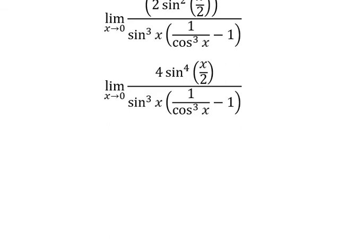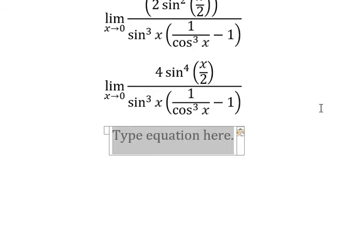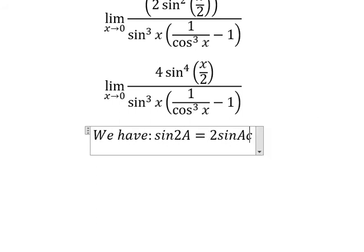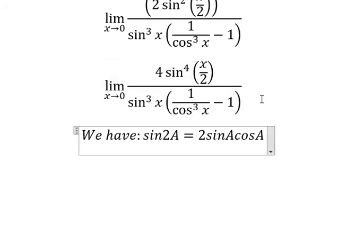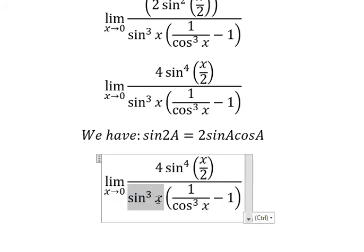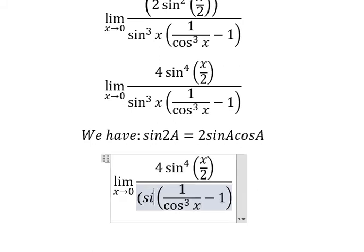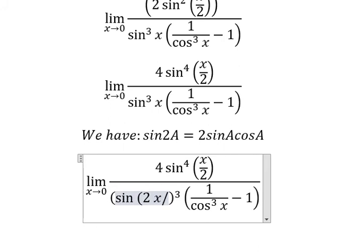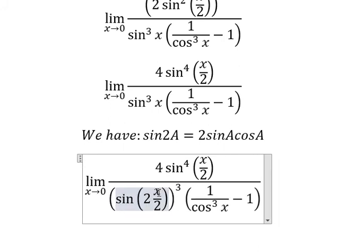Next we move to the next step. The sine double angle formula: sin(2A) equals 2 sinA cosA. So this one — sine x to the power of 3 — and this one we can change by 2 multiplied by x over 2, so capital A is x over 2.